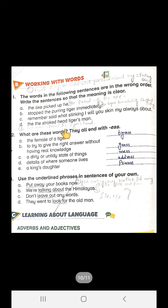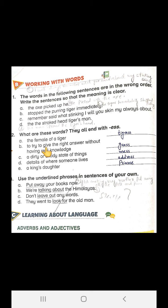Turn the pages and see this exercise. What are these words? They all end with E double S. Students, they have given you clues and you are going to guess the right word. A is: the female of a tiger. If we write E double S at the end of tiger, it will become tigress. B is: to try to give the right answer without having real knowledge. What do we call it? Guess.